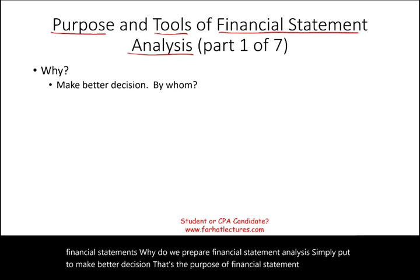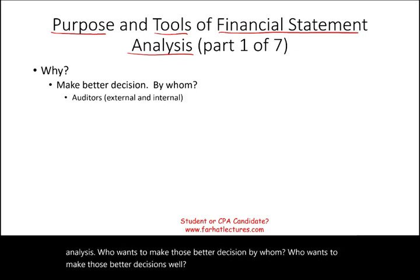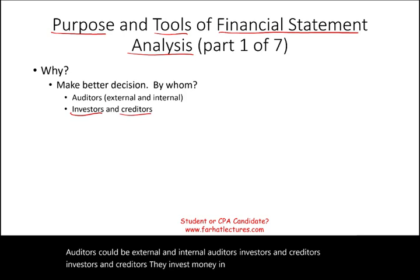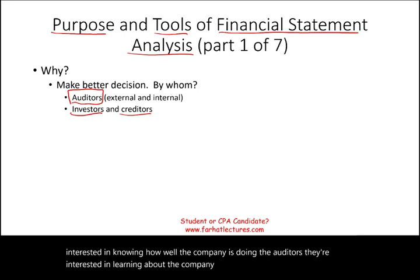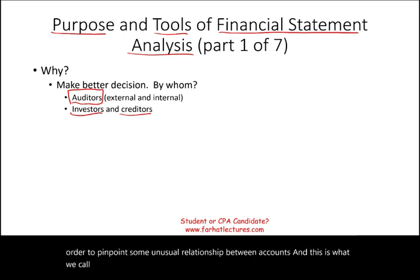Who wants to make those better decisions? Well, auditors could be external and internal auditors, investors and creditors. Investors and creditors invest money in the company and are very interested in knowing how well the company is doing. The auditors are interested in learning about the company in order to pinpoint red flags, in order to pinpoint some unusual relationship between accounts. And this is what we call in auditing analytical procedures.